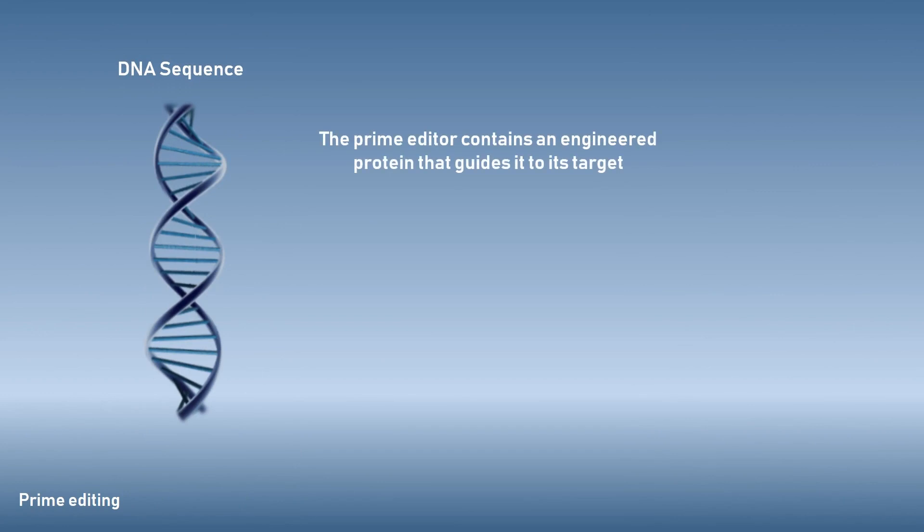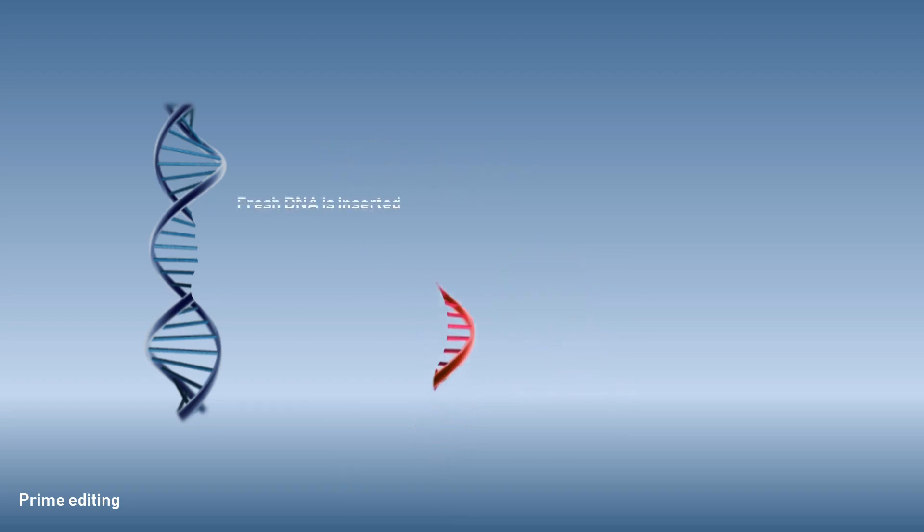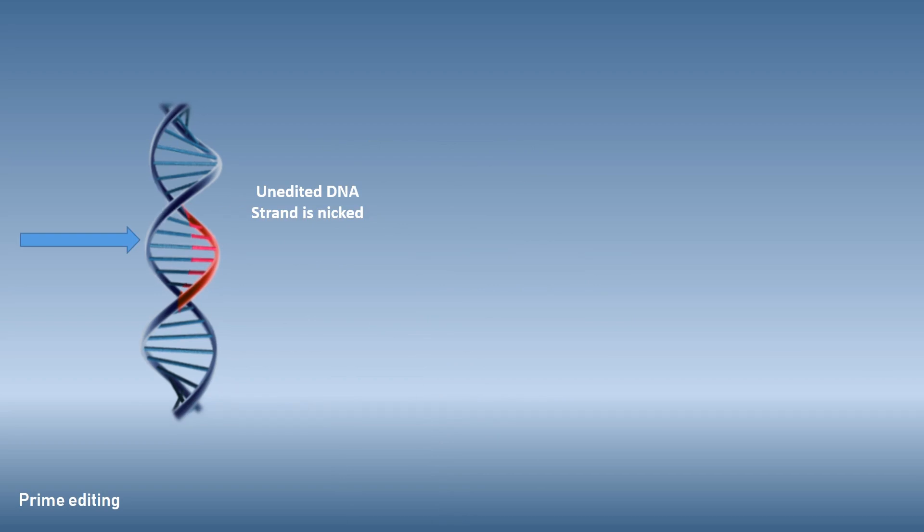CRISPR-Cas9 and prime editing both work by cutting DNA at a specific point in the genome. CRISPR sometimes changes genes it shouldn't. With prime editing, researchers have far better control over the type of edit they want because unlike CRISPR, scientists do not need to immediately activate the cell's repair system that is prone to errors.